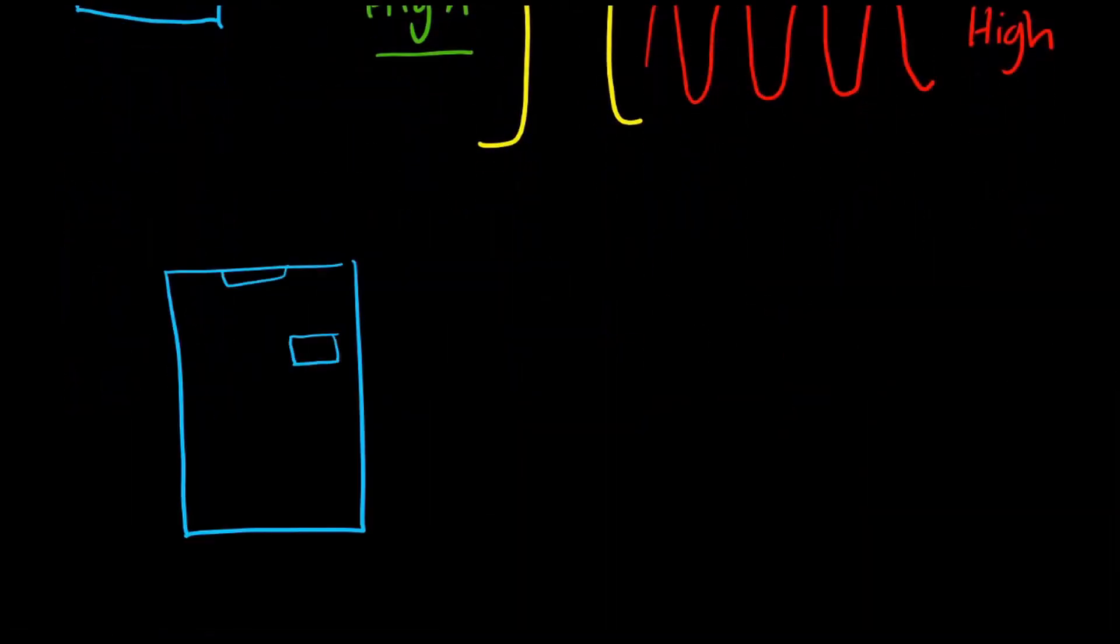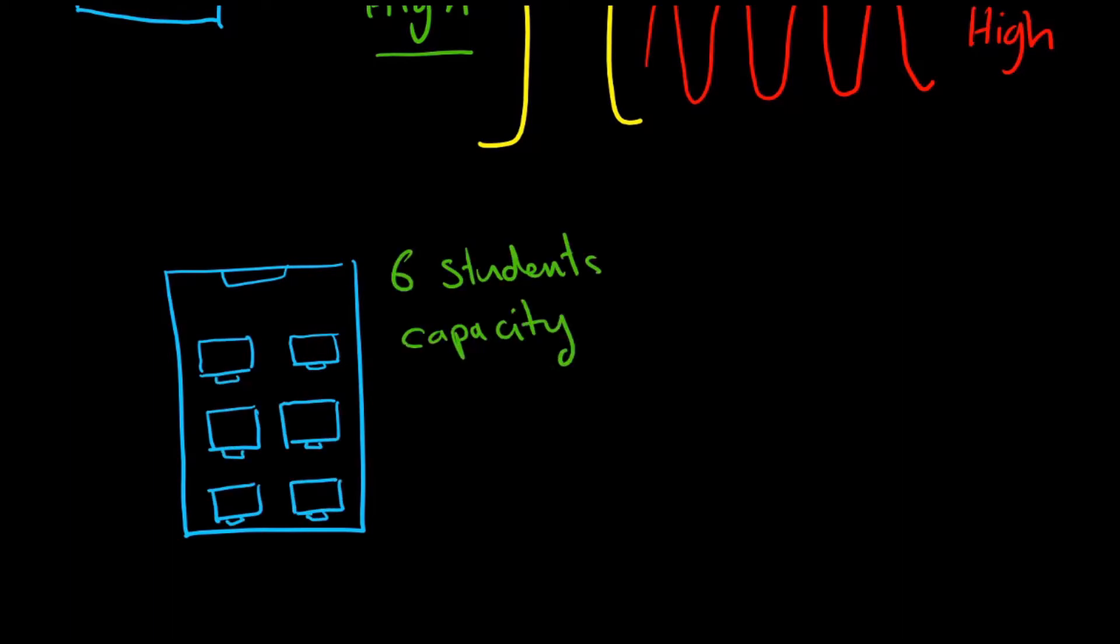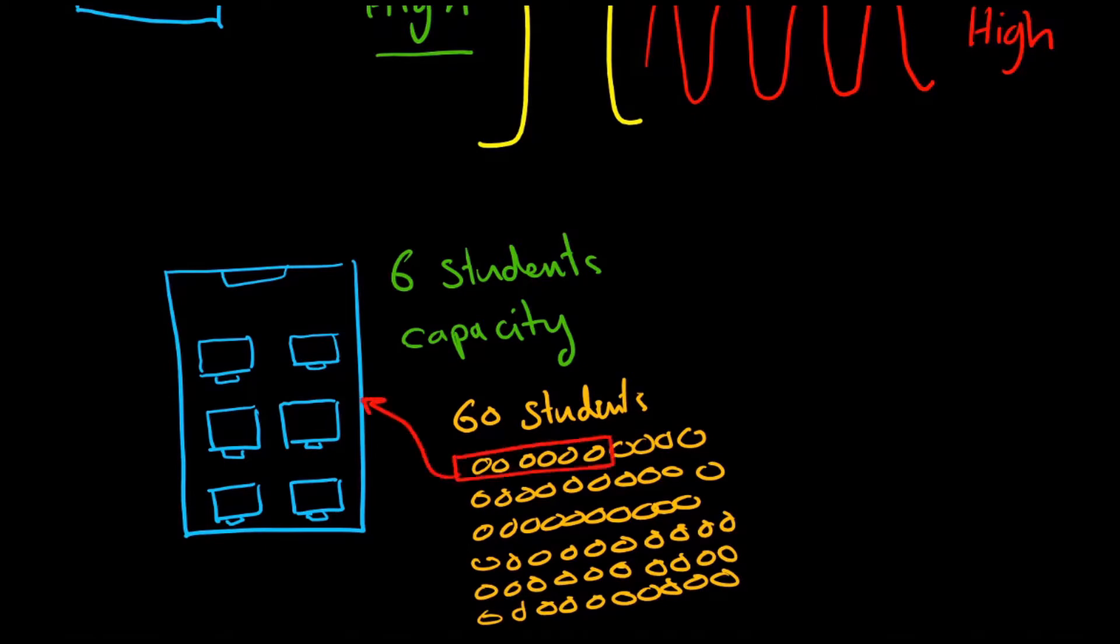Suppose that we have a classroom. The capacity of this classroom is 6 students. If we have 60 students in total, we can use this classroom 10 times a week, for example.